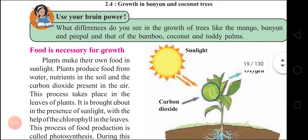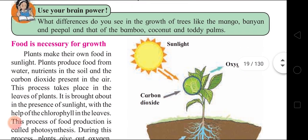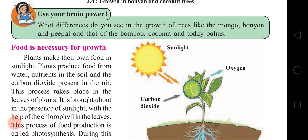Food is necessary. Use your brain power: what differences do you see in the growth of trees like the mango and banyan, and that of the bamboo, coconut, and toddy palms? Mango and banyan trees grow big both width-wise and length-wise, whereas bamboo, coconut, and toddy palms grow straight and only grow tall.